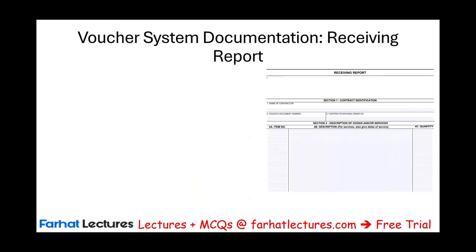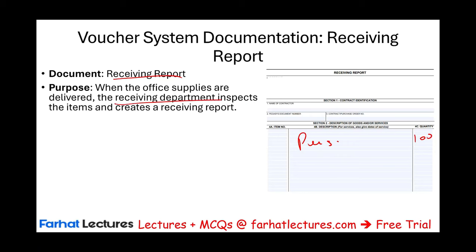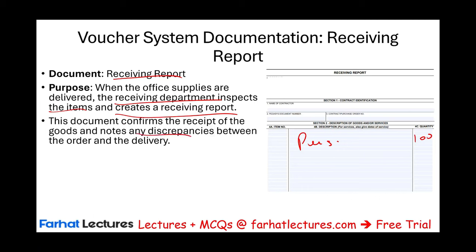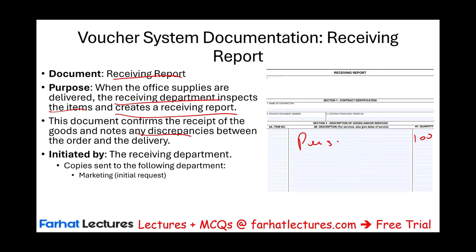The supplier — Office Depot — will ship the pens to the receiving department, whose job is to receive the product. The receiving department will prepare a receiving report, confirming they received 100 pens. They inspect the items, make sure they match what was ordered, and note any discrepancy. In our case, we ordered 100 and received 100 — no discrepancy.